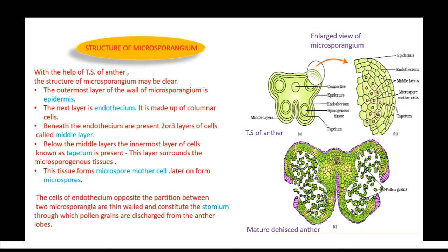Beneath the endothecium, there are two to three cellular layers called the middle layers. The innermost layer is the tapetum, which is a very important cellular layer. Tapetum surrounds the microsporangium tissues, which form pollen grains. When the pollen grains become mature, the tapetum disappears.